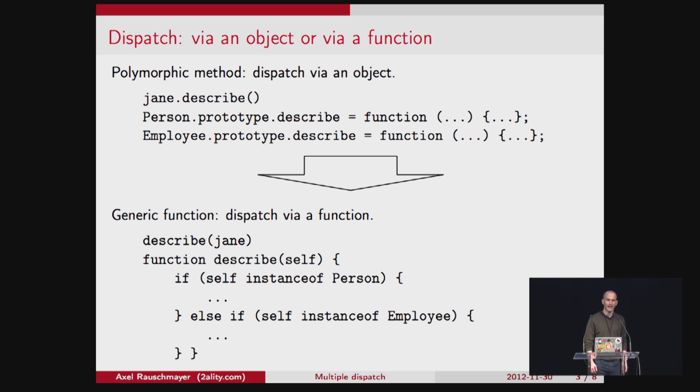If, on the other hand, you have a generic function, then things work differently. Jane is now just a normal argument, and the function internally checks the type of the argument, and then, depending on the type of the argument, chooses between two different implementations.